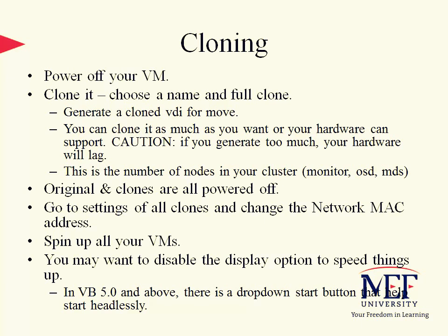After creating the clones, power them all on. The original is powered off; the clones are by default powered off initially. Go to the settings for each clone and change the network MAC address for each — this is needed to get distinct IP addresses from the DHCP servers on first launch. Then statically allocate IPs. Spin up your VMs and I recommend disabling the display option to save RAM. In VirtualBox 5 and above, there's a headless start dropdown option you can use.